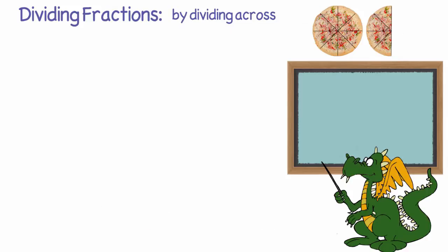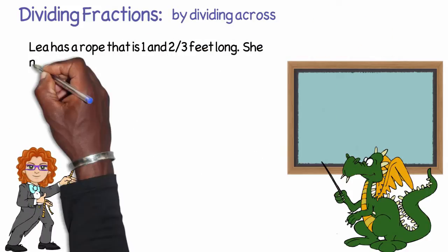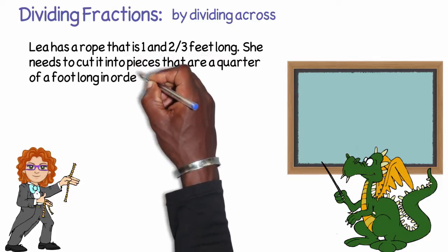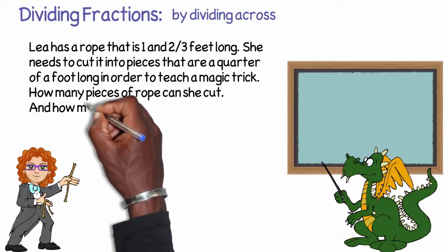Let's try a second problem. Li has a rope that is one and two thirds feet long. She needs to cut it into pieces that are a quarter of a foot in length in order to teach a magic trick. How many pieces of rope can she cut? And how much is left over?